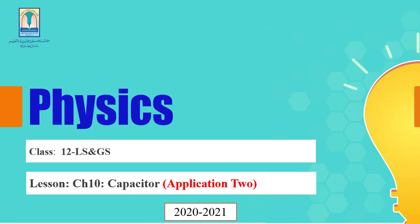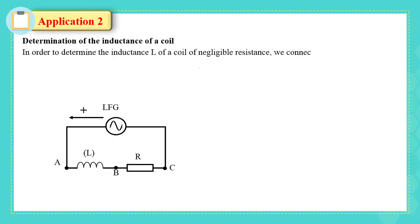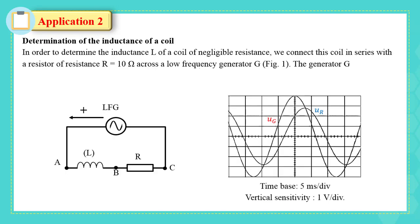Assalamualaikum warahmatullahi wabarakatuh. In this video, we are going to solve Application 2 on RL series circuit — determination of the inductance of a coil. In order to determine the inductance L of a coil of negligible resistance, we connect this coil in series with a resistor of resistance R equal to 10 ohm across a low-frequency generator, as shown in Figure 1.